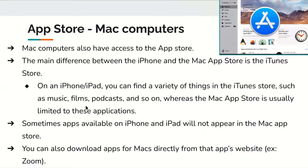Mac computers also have access to the App Store. The main difference between the App Store on the iPhone versus the Mac is iTunes Store — on an iPhone or iPad, you can find music, films, and podcasts in the iTunes Store, whereas the Mac App Store is usually limited to applications. Sometimes apps available on iPhone and iPad will not appear in the Mac App Store, as some apps are only compatible with mobile devices. You can also download apps for Macs directly from the app's website — for example, Zoom can be downloaded either from the App Store or directly from the Zoom website.